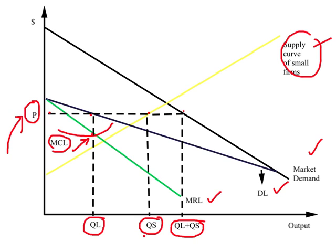This kind of price-setting behavior has been observed in the banking industry. In the US, very few very large banks are accompanied by a very large number of small local banks. The large dominant banks set the rate of interest, and that rate is taken as given by the small regional or local banks. This is how the price or rate of interest is determined, and the market is shared between the dominant firm and the very small firms. This completes our discussion of oligopoly.